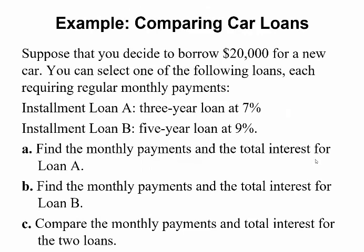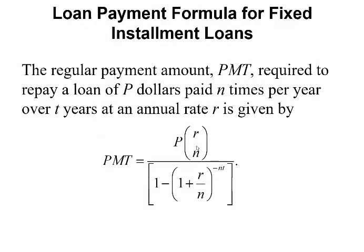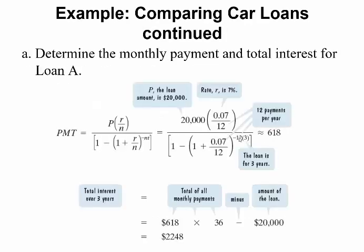Suppose you decide to borrow twenty thousand dollars for a new car and can select one of the following loans, each requiring regular monthly payments. Option A is a three-year loan at seven percent, or option B is a five-year loan at nine percent. We'll find the monthly payment and total interest for each loan, then compare the two. For both, P is twenty thousand dollars and N is 12 — the only things that differ are R and T.